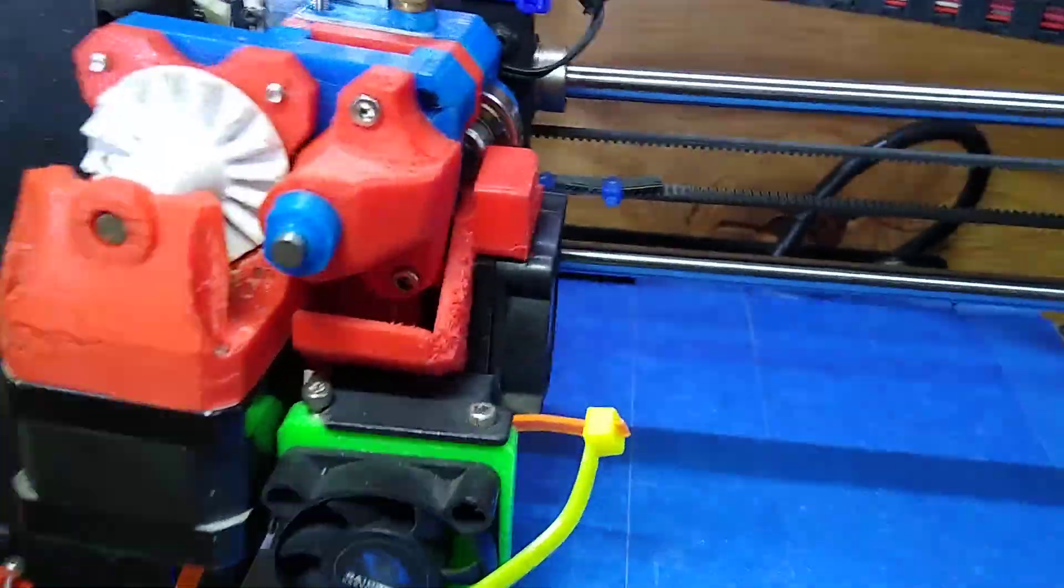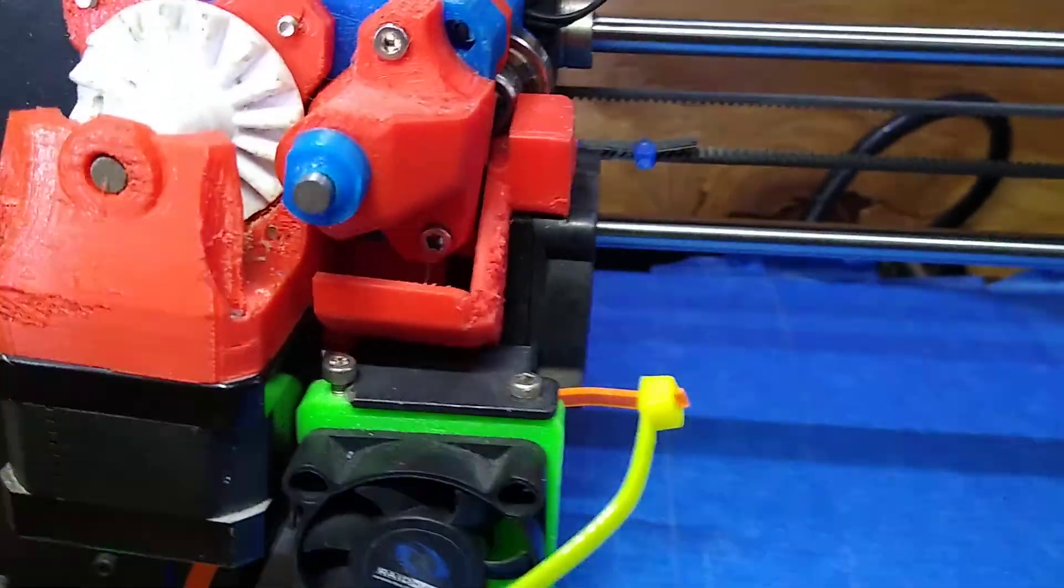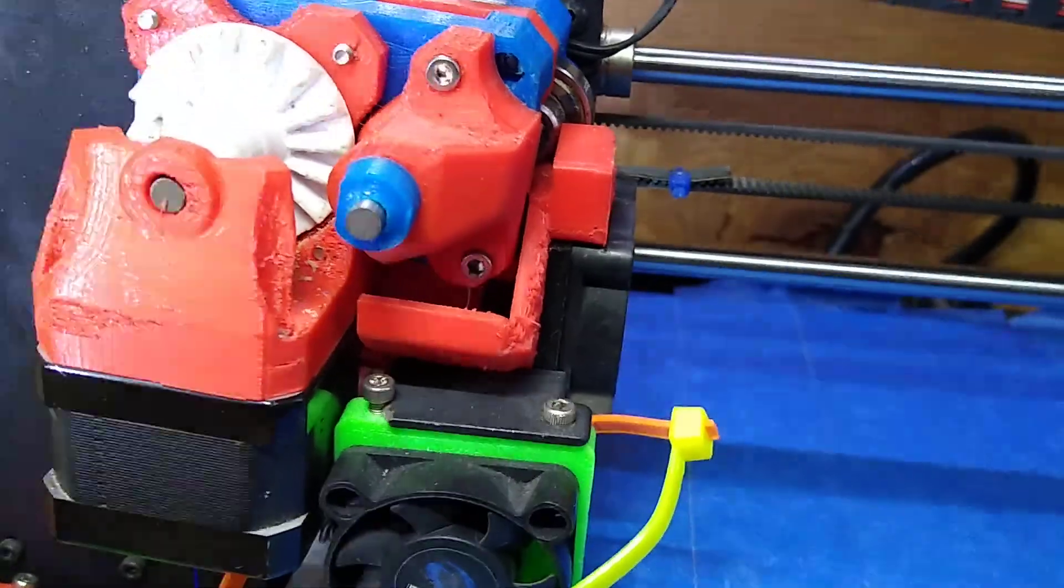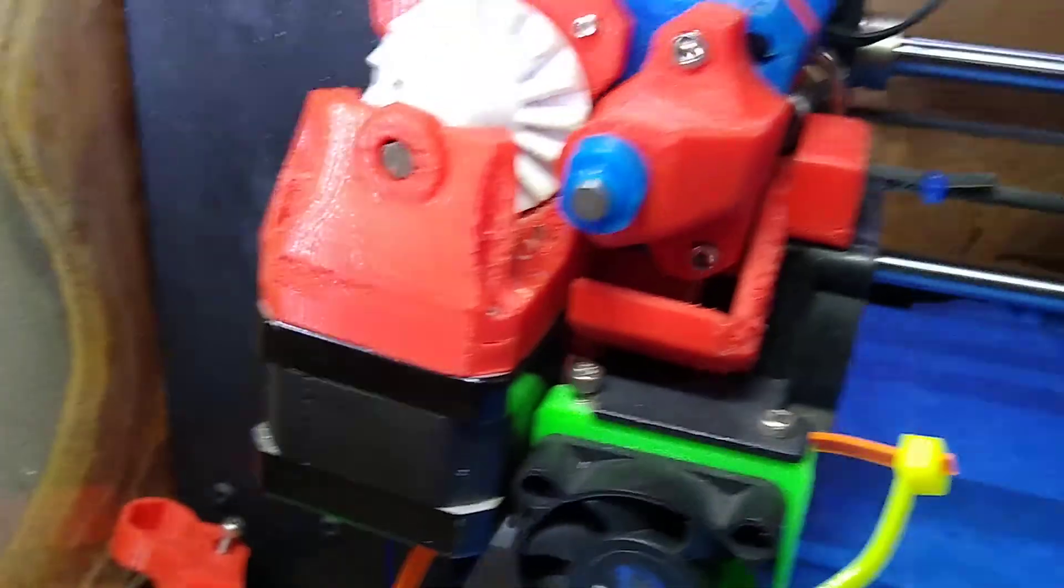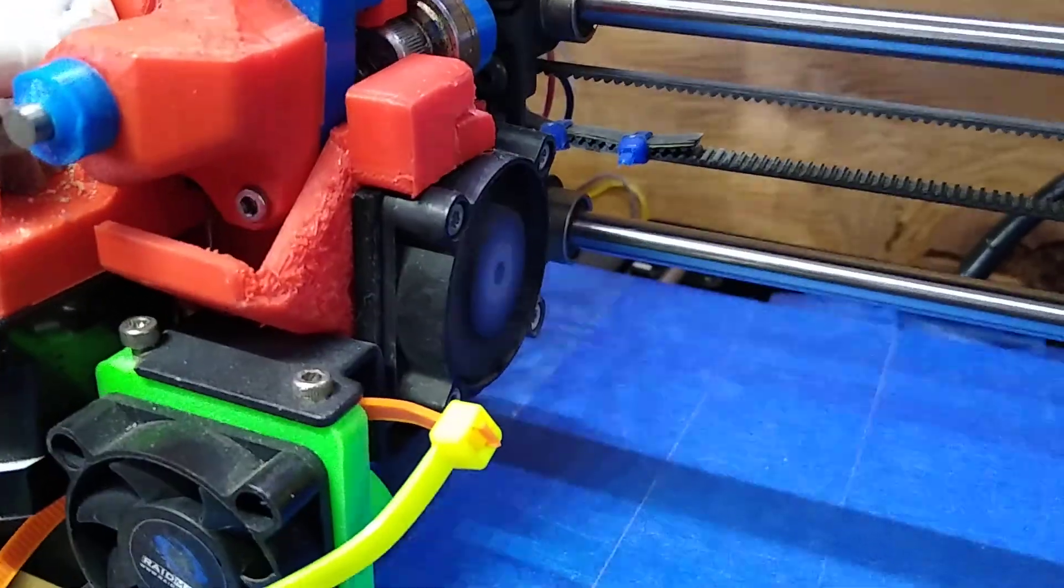Next thing you have to do again is from the stock mount where the fan is on this printer, which has to be a stock printer—very important that you—it's a Maker Select.